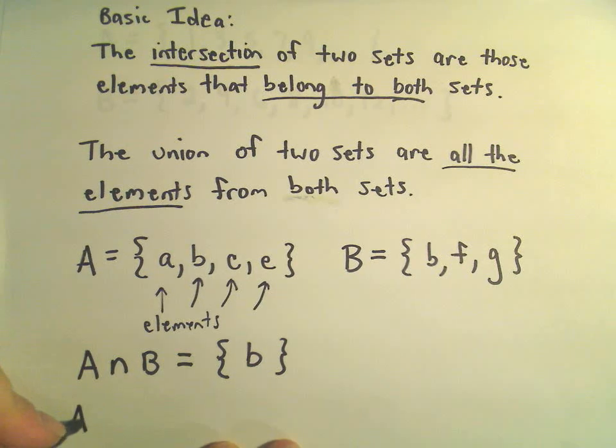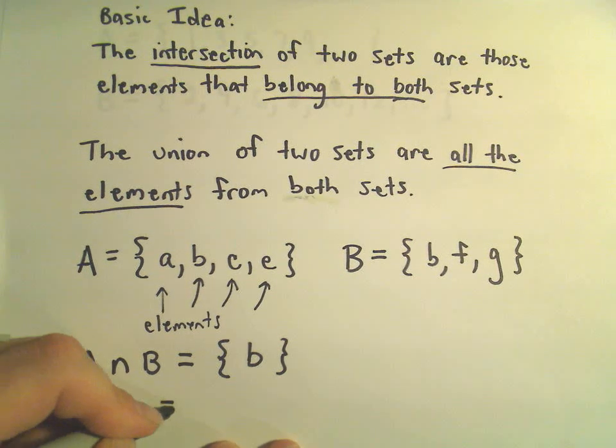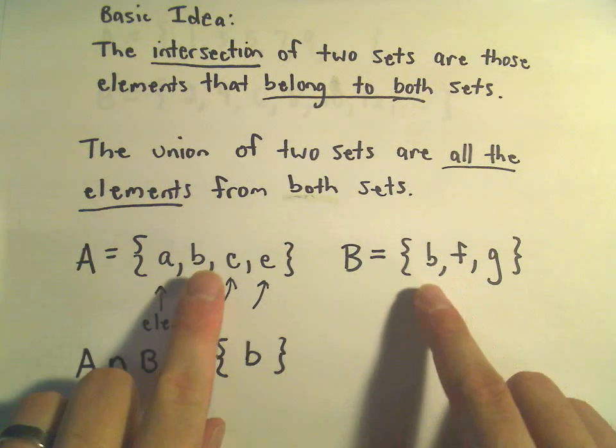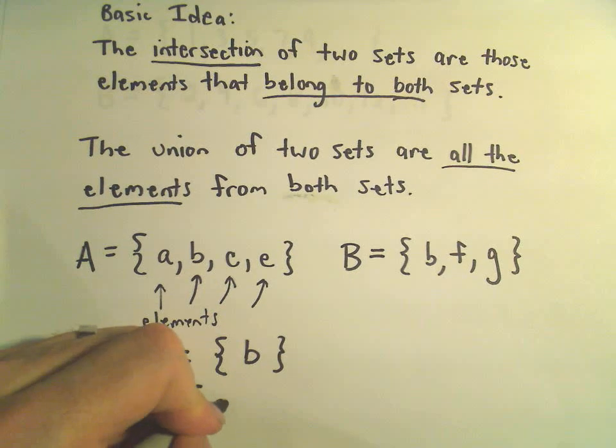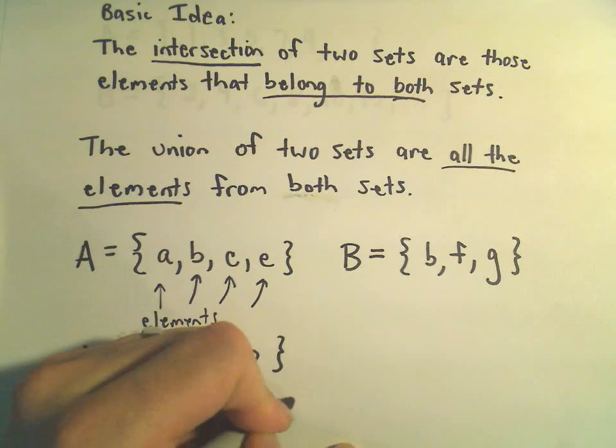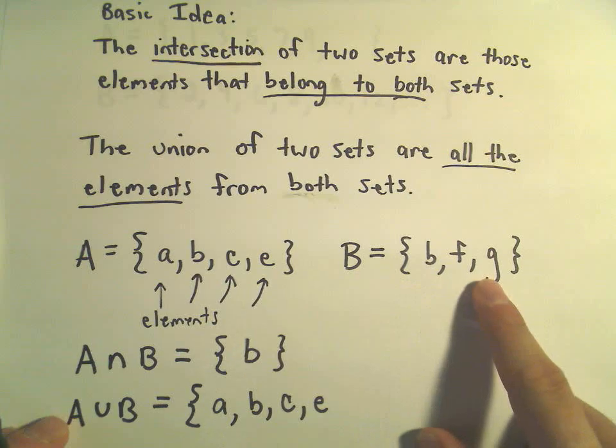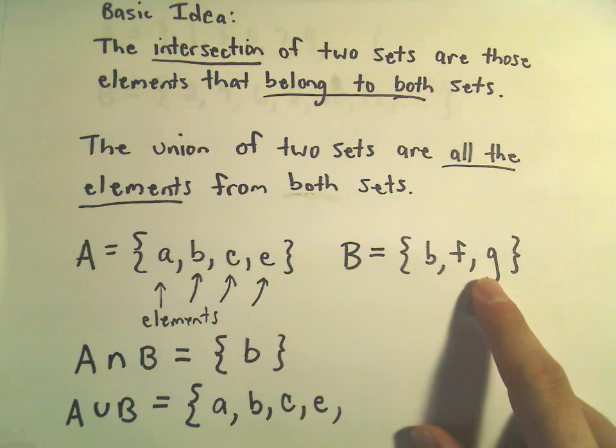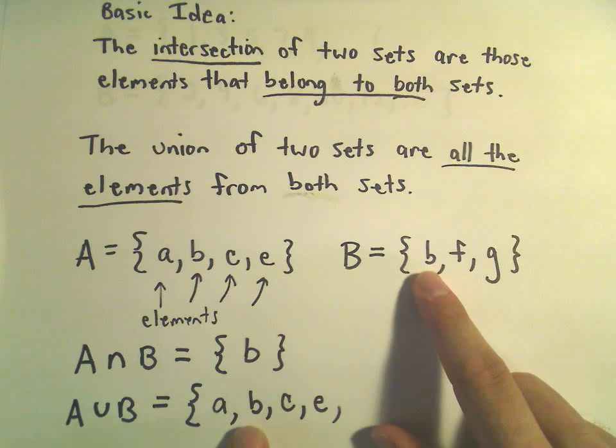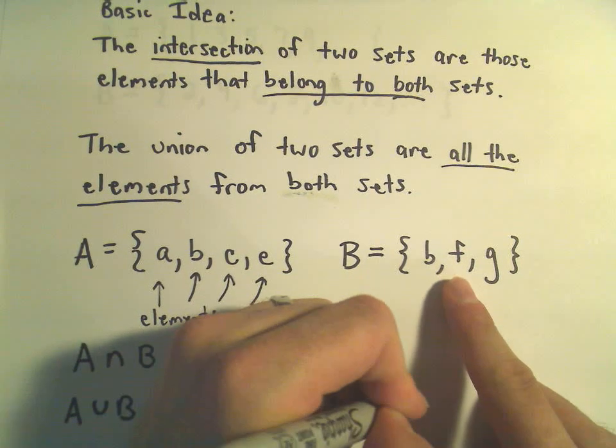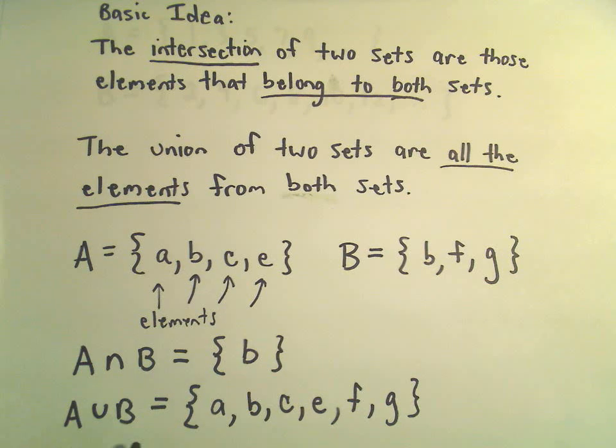If we look at the union, A union B, now we just simply list everybody. We just stick everybody together in one big set. So, we've got A, B, C, and then E. So, that's everybody from set A, and now I'm going to list everybody from set B. I've already got a little B listed, so I'm not going to list that again, but then we would also have to include F, and we would also have to include G. So, this would be the union of our two sets. We just list everything down.